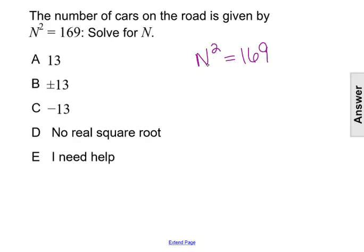Well, right now it's not by itself. It's being squared. So we need to do the opposite or inverse operation of squaring a number. We need to take the square root. That will undo the squaring and leave us with just N.